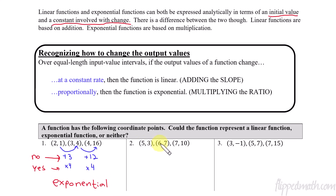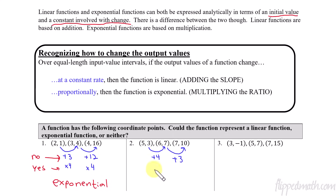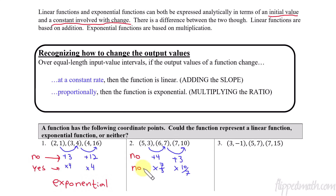Next example: x values go 5, 6, 7 — equal distance. From 3 to 7 is adding 4, but from 7 to 10 is adding 3 — not the same. For multiplying: 7 divided by 3 gives 7/3, and 10 divided by 7 gives 10/7. Those are not the same, so the answer to both checks is no — this is neither exponential nor linear.